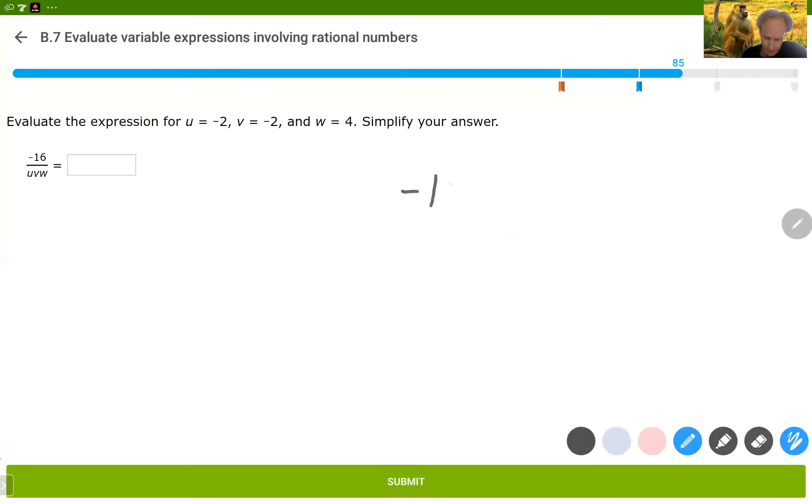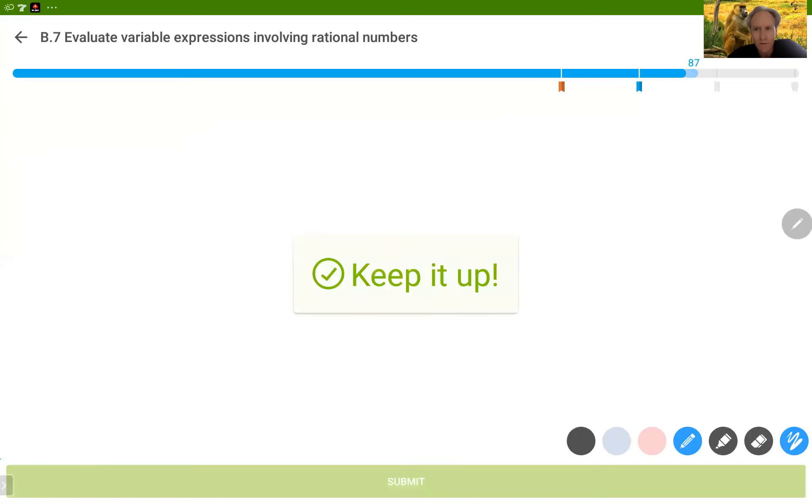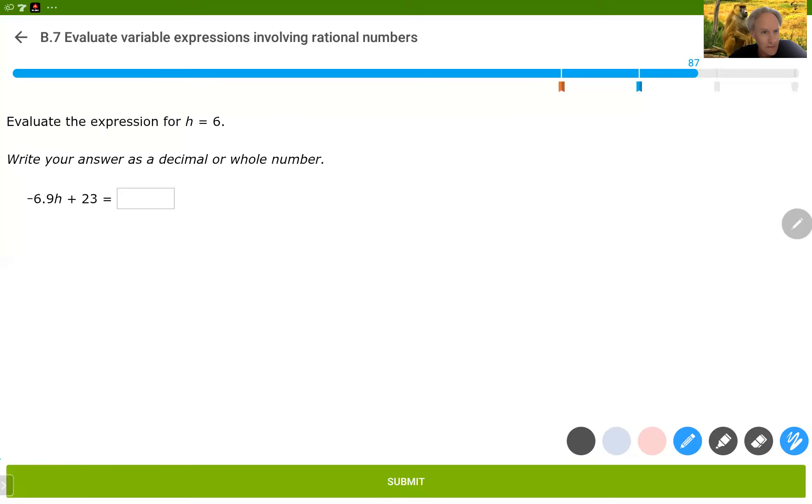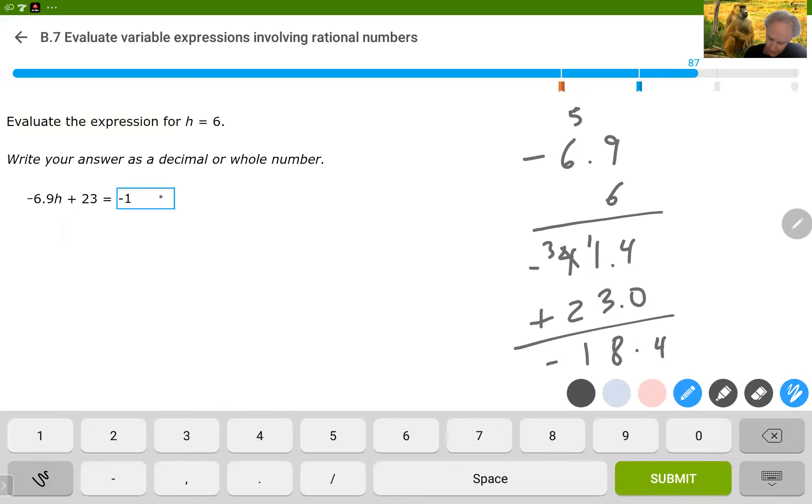Okay, so we've got negative 16 over negative 2 times negative 2 times 4, which is negative 16 over negative 16, which is 1. Don't want to make a sign error at that point, not when we're almost done. I've got negative 6.9. We're multiplying that by 6. I'm going to go ahead and multiply it down here. That's 4, carry the 5, and that's 41. That's 36 and 5 makes 41. We've got a decimal and a negative. And we have to add 23. Again, we're looking at a difference here. That is 0, 3 from 11 makes 8, then 2 from 3 is 1. And the negatives win. Negative 18.4.